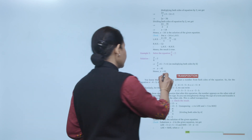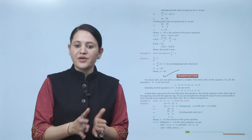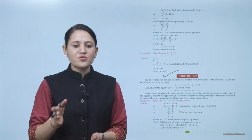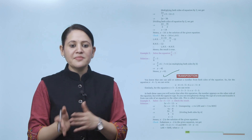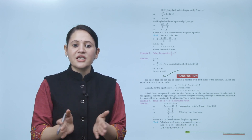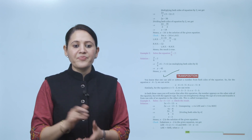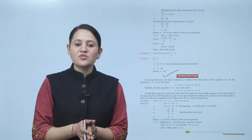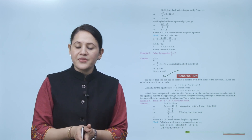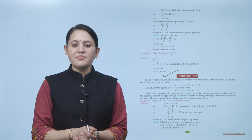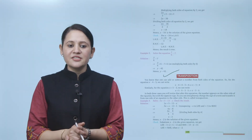Transposition: we know that one can add or subtract a number from both sides of an equation. For x minus 4 equals 5, adding 4 to both sides gives x equals 5 plus 4. For x plus 5 equals 3, subtracting 5 from both sides gives x equals 3 minus 5. Notice that the number moves to the other side with the opposite sign. This is called transposition: changing the sign of a term when transferring it from one side to the other.